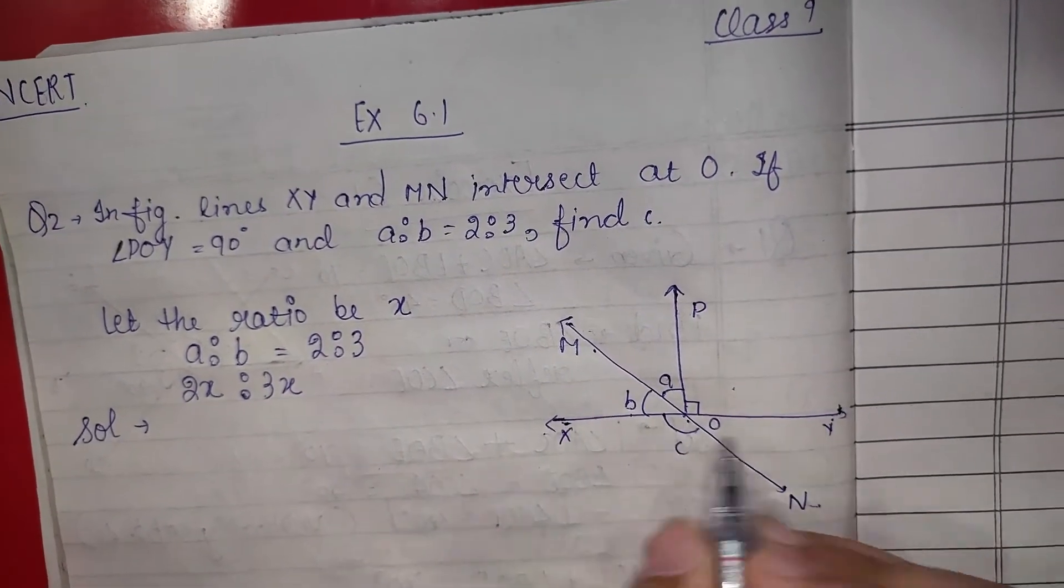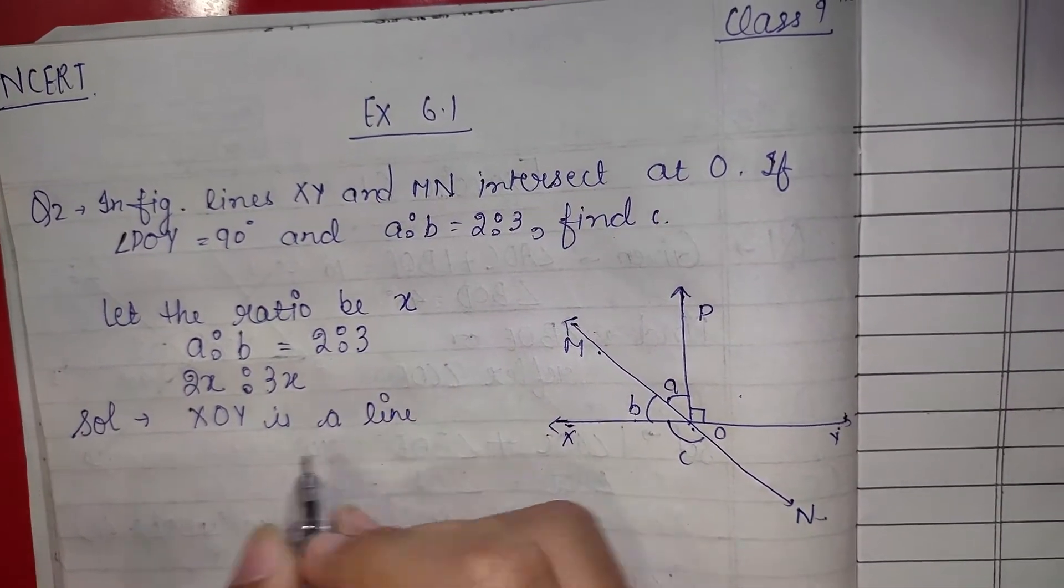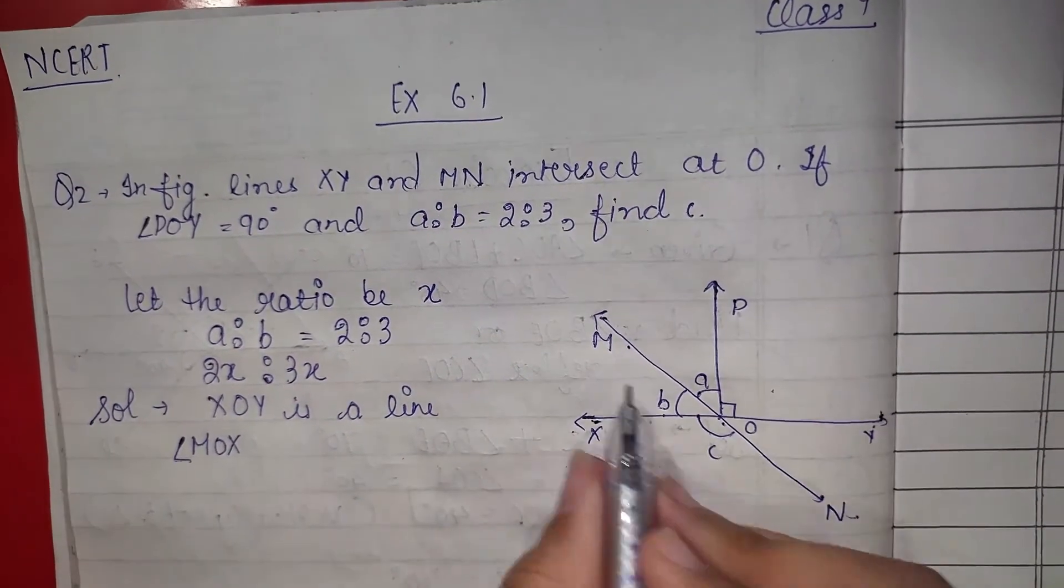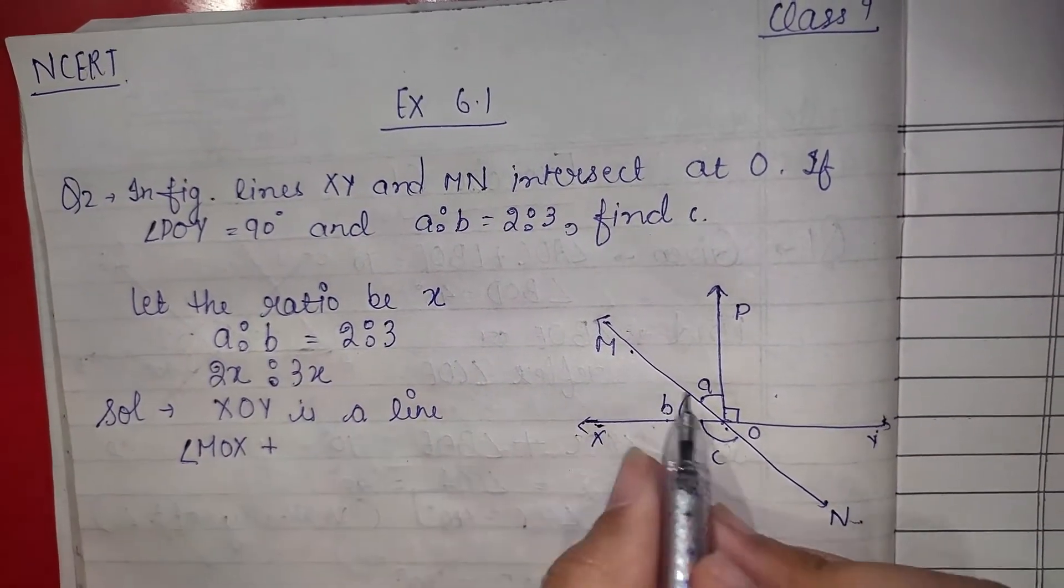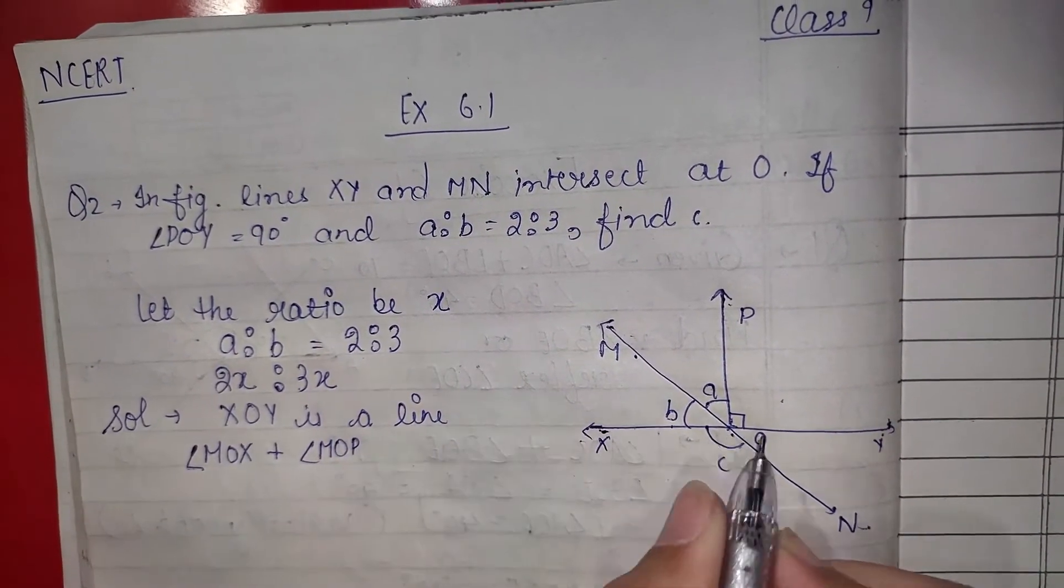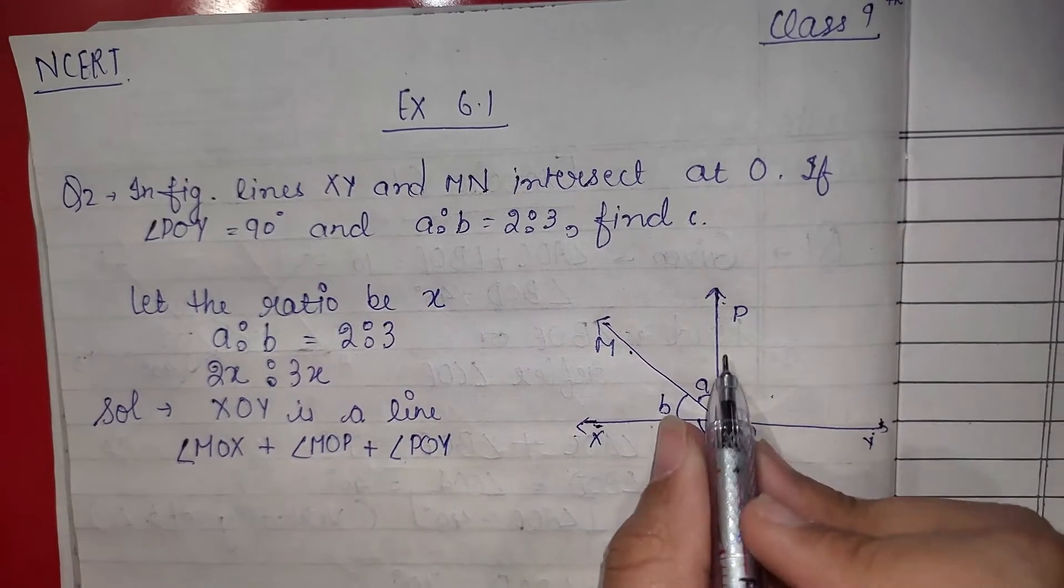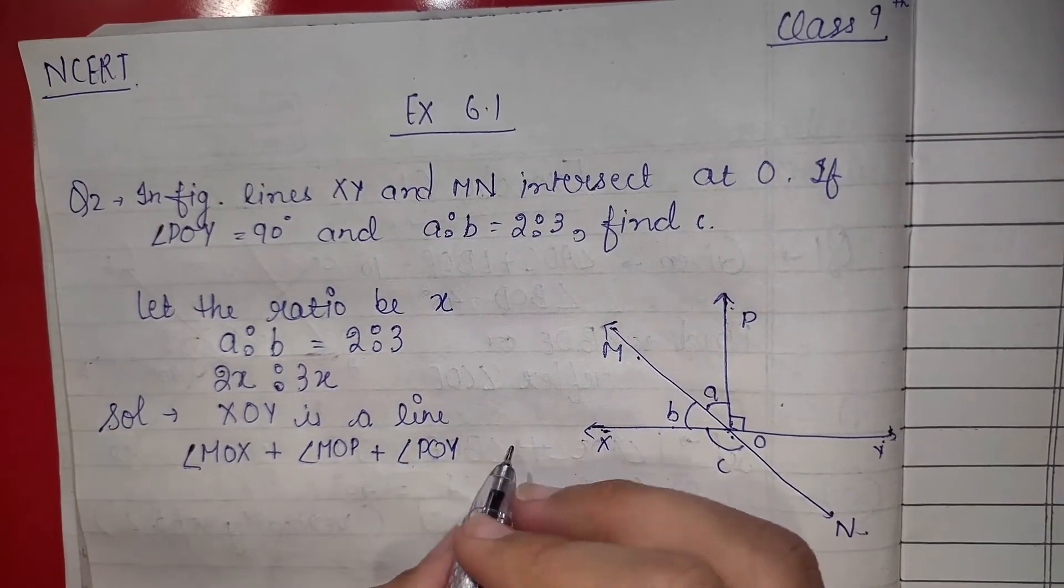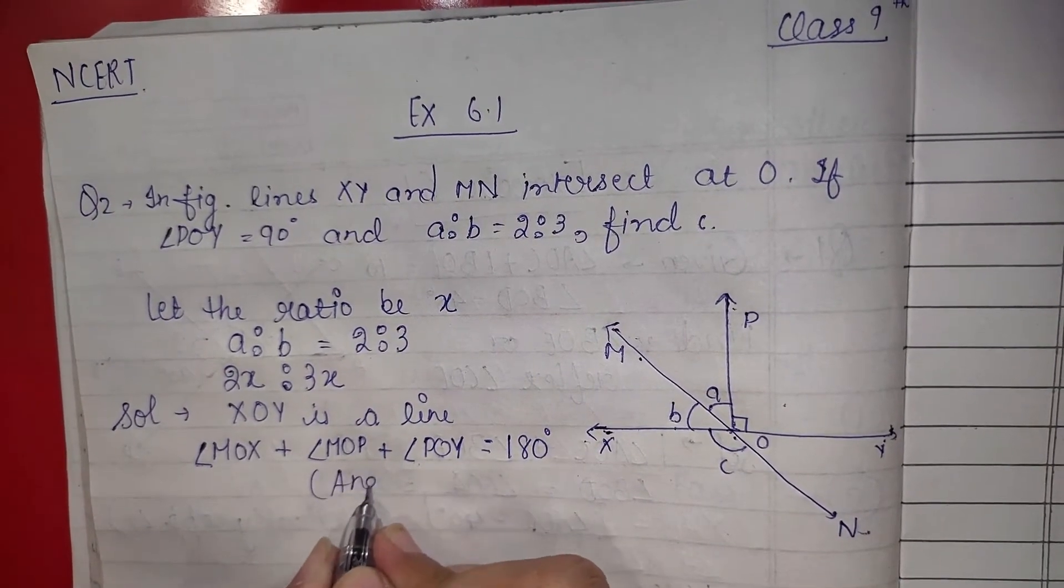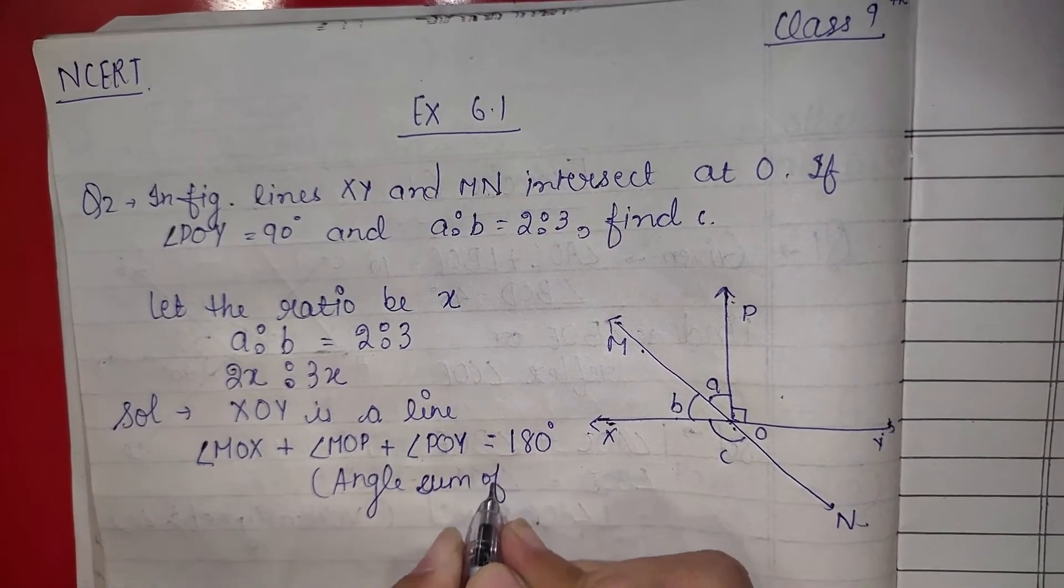XOY is a line. So angle MOX, angle b plus angle MOP, angle MOP means a and angle POY means angle c is equal to 180 degrees by angle sum on straight line.